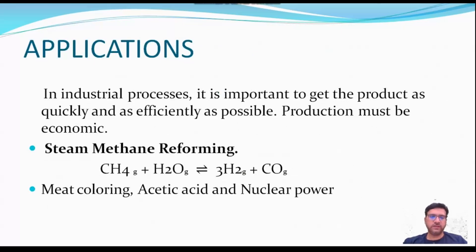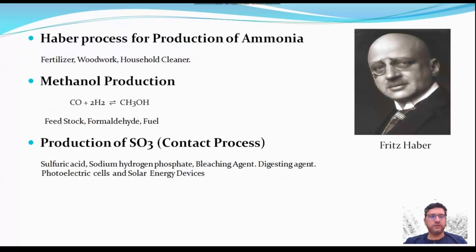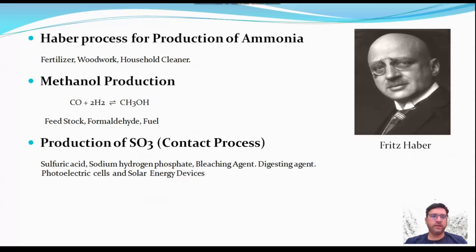Applications: In industrial processes it is important to obtain the product as quickly and efficiently as possible, and the production must be economical. For example, steam methane reforming produces carbon monoxide (used in meat coloring and production of acetic acid) and hydrogen (used in nuclear power). The Haber process produces ammonia, which is used in fertilizers to maximize crop yield and in household cleaners. Methanol production provides feedstock for formaldehyde, which is used in plastics, plywood, paints, explosives, and textiles; methanol is also used as a fuel. Production of sulfur trioxide is used in making sulfuric acid, sodium hydrogen phosphate, bleaching agents, digesting agents, and photoelectric cells and solar energy devices.